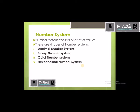In a number system, there is usually a set of values, which means a set of numbers. In each number system there are different sets of numbers. There are mainly four types of number systems: decimal number system, binary number system, octal number system, and hexadecimal number system. In this class we are learning about two number systems — the decimal number system and the binary number system.